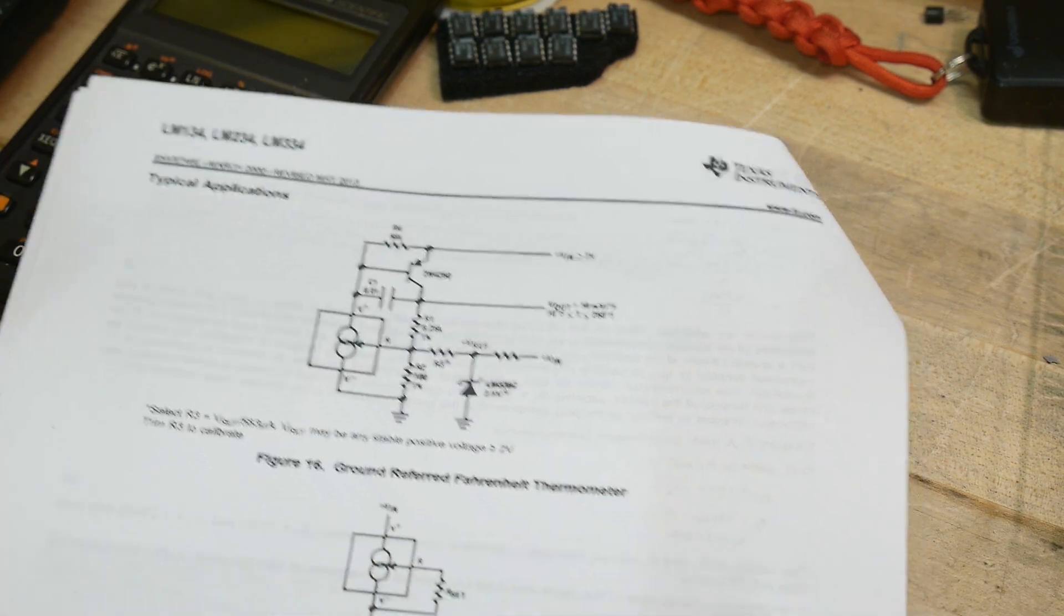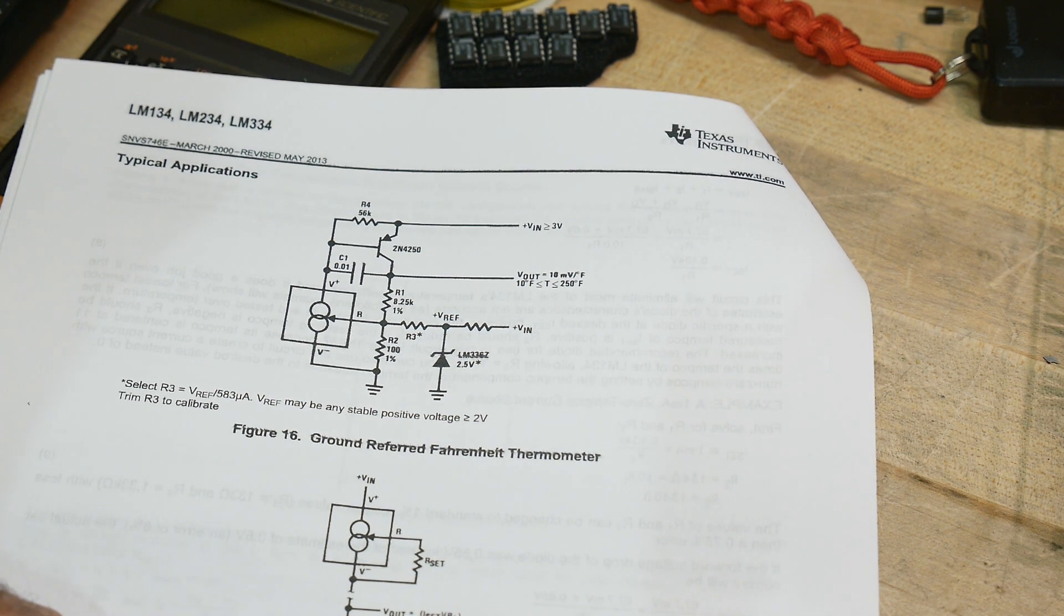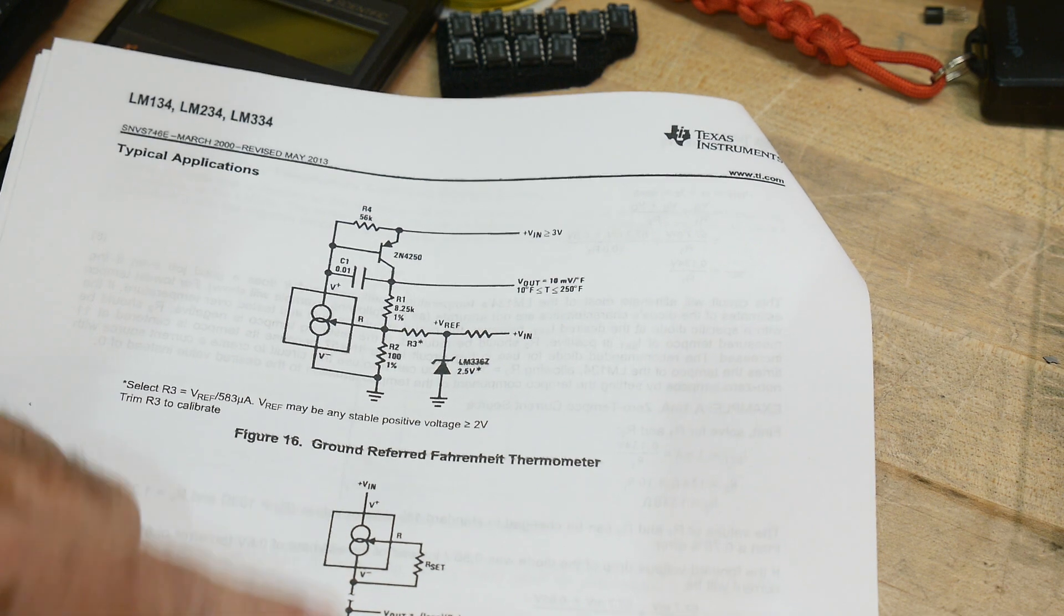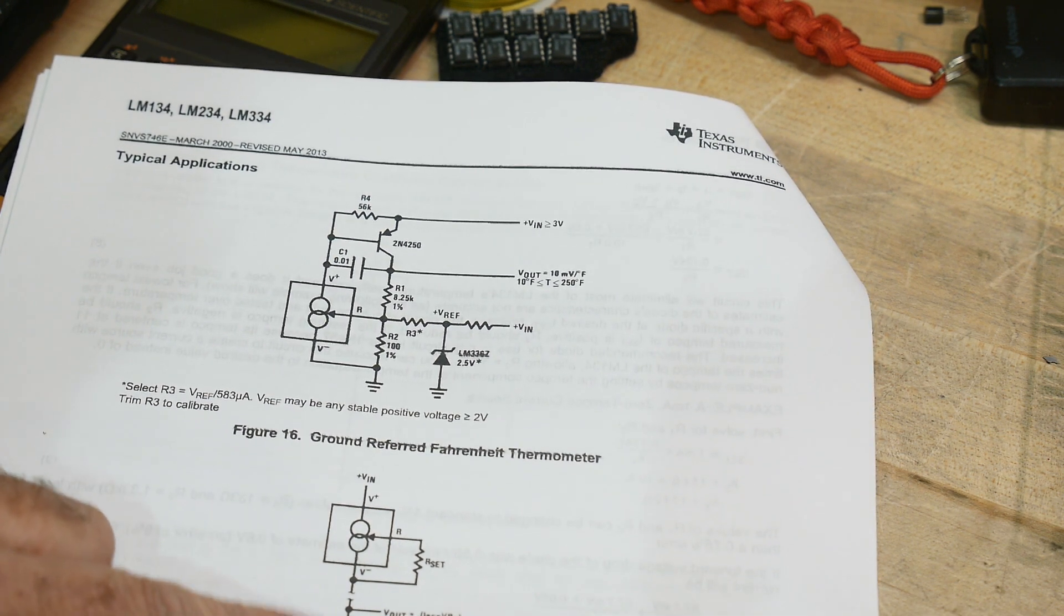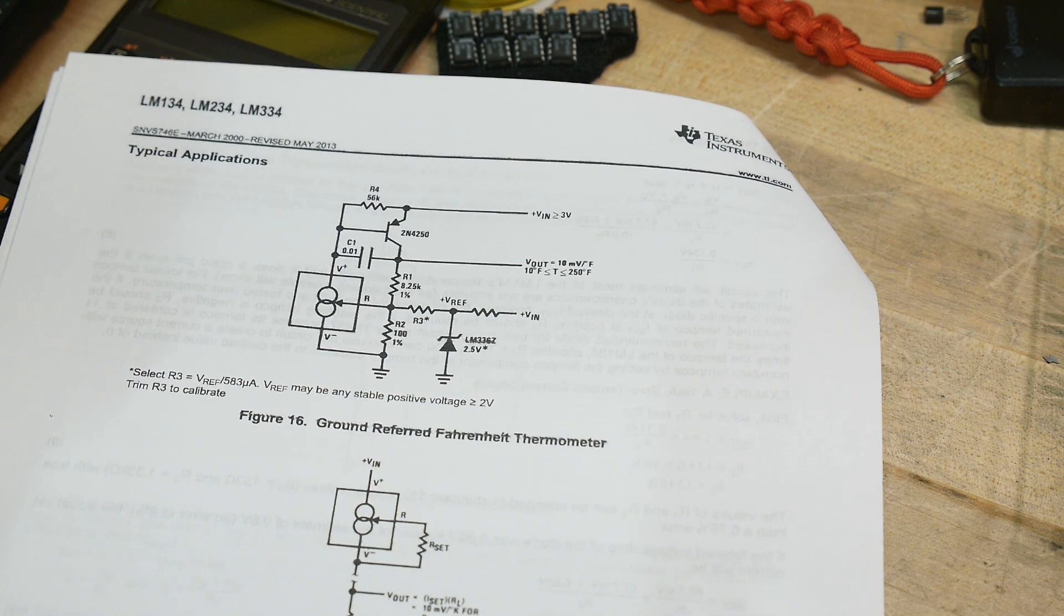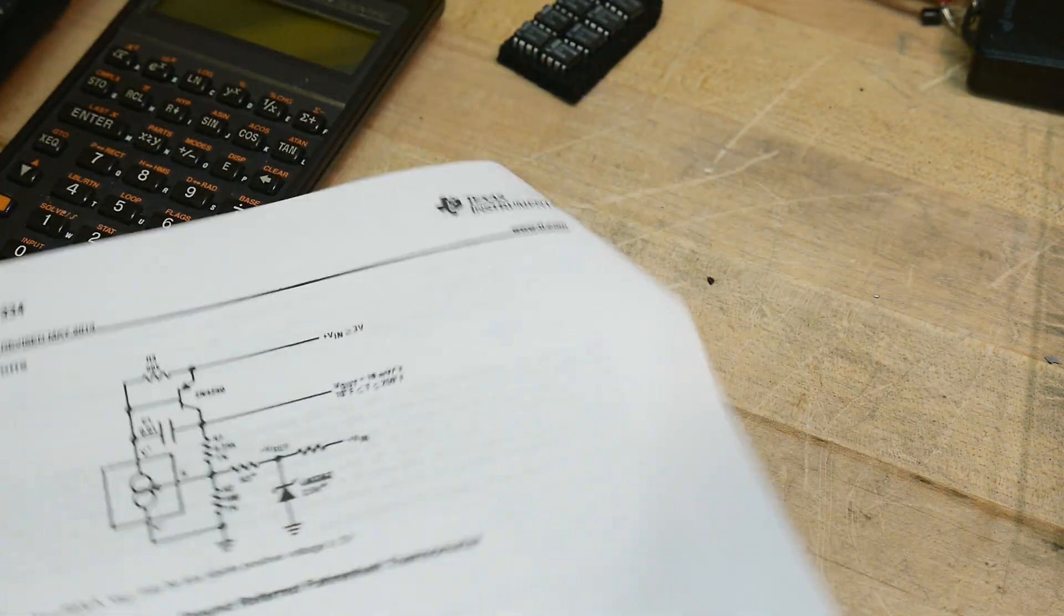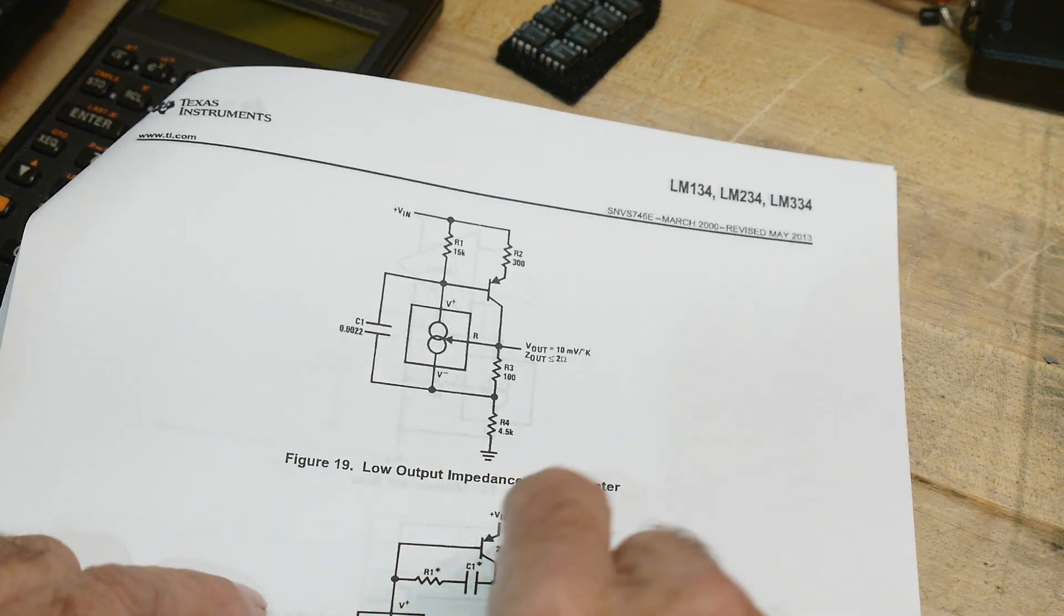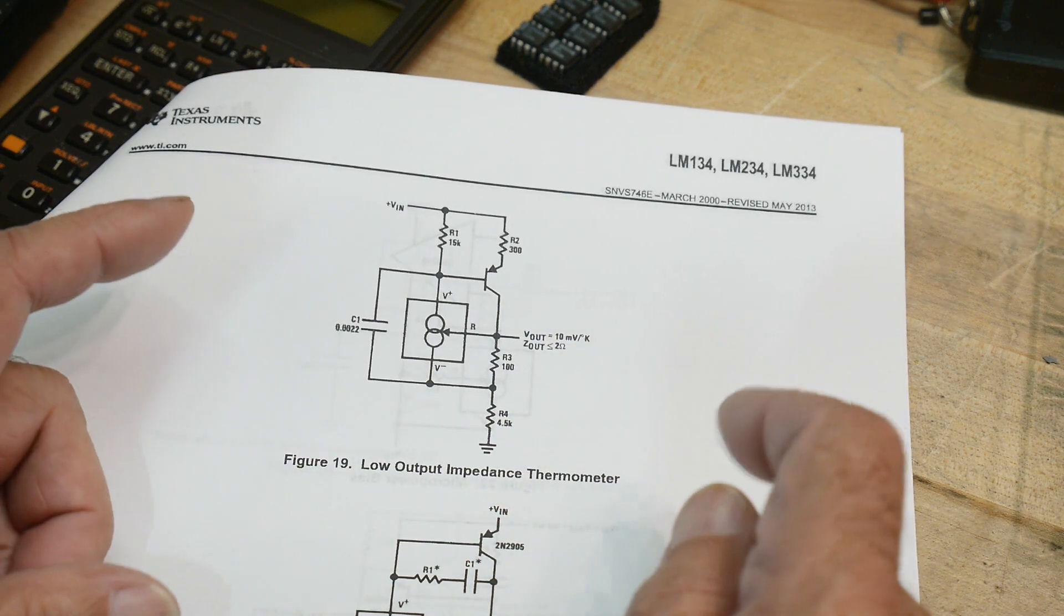Here's, it's once being used as a ground reference Fahrenheit thermometer. Okay. Here's the circuit. This one is terminating remote sensor for voltage output, right? And so you need to have a constant current if you are trying to measure the voltage across the load. Low output impedance thermometer. So another thermometer trick. And then they get kind of complicated, right? Low output impedance thermometer, another thermometer thing.